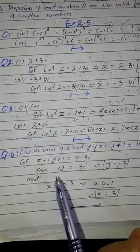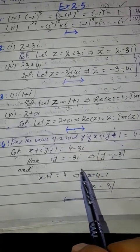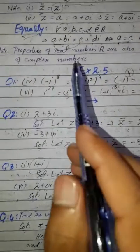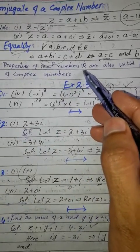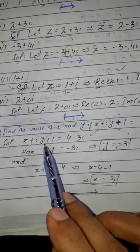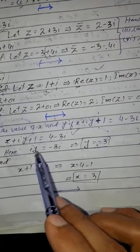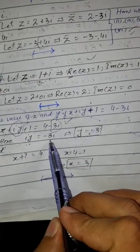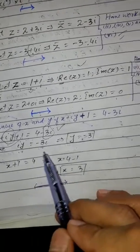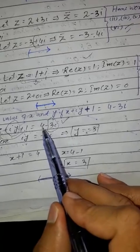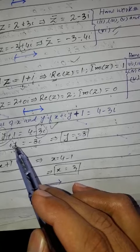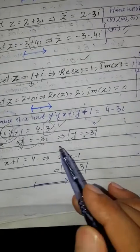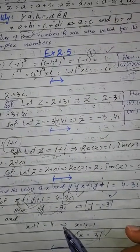Question 3: separate the real and imaginary parts of 1 plus iota. The real part Re(Z) equals 1 and the imaginary part Im(Z) equals 1. For 2 plus 0 iota, the real part is 2 and imaginary part is 0. Question 4: find x and y given x plus iota y plus 1 equals 4 minus 3 iota. Equating real parts: x plus 1 equals 4, so x equals 3. Equating imaginary parts: y equals minus 3.